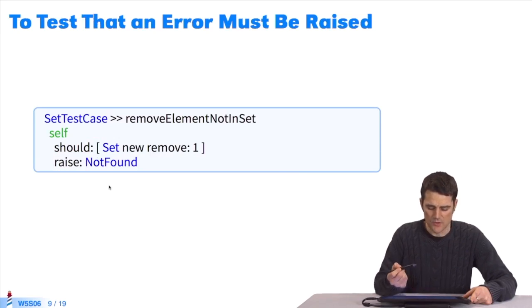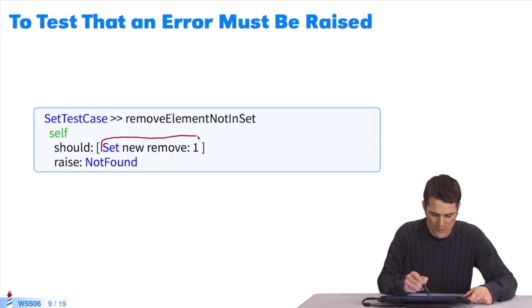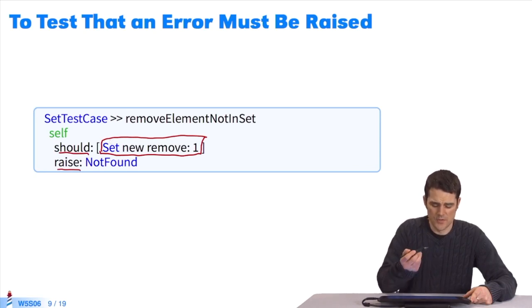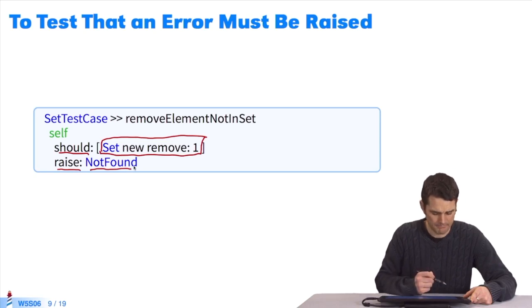What do we do in a test when we want to check that a bit of code raises an exception? For example, I want to check that set new remove 1, this bit of code, will raise the exception NotFound. If I do set new, it's an empty set. I'm trying to take an element from an empty set, it doesn't make sense. It will raise the exception NotFound. And in my test, I use should raise. I pass a block, and in my evaluation of the block, if an exception is raised, and the exception is NotFound, the test will be green, will be OK.